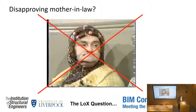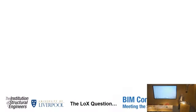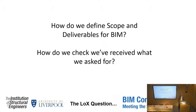So if my title question was about LOX — if this is the answer, what is the question? The question could be one of two things: first, how do we define scope and deliverables for BIM? That's absolutely fundamental. But also critically important is how do we check we've received what we actually asked for.